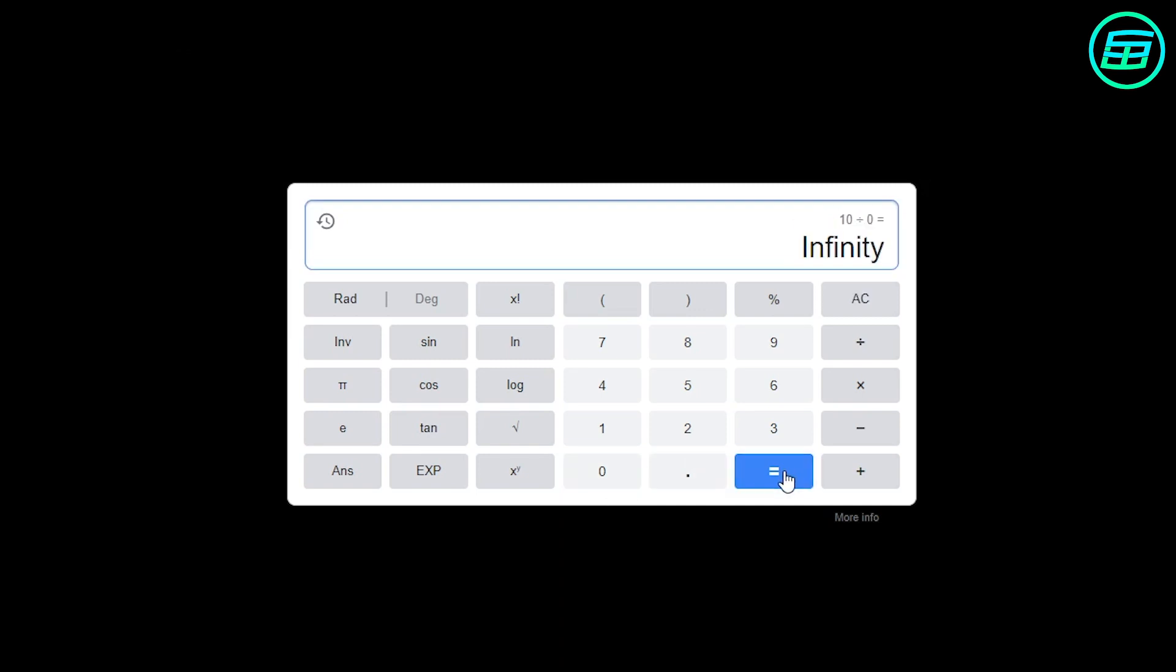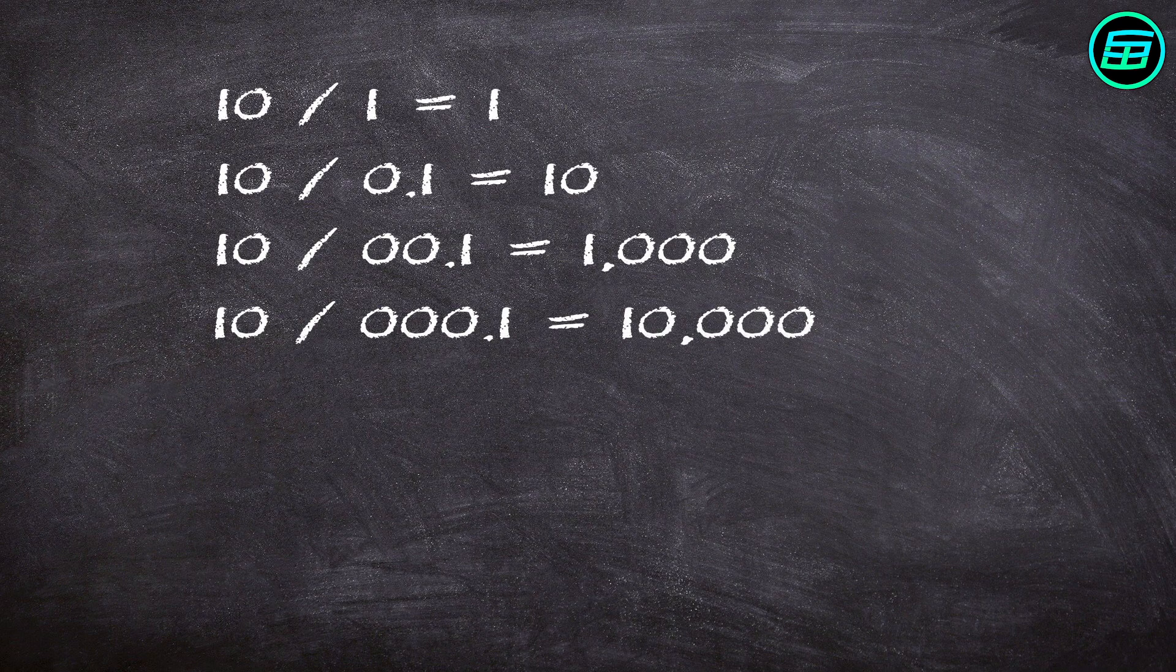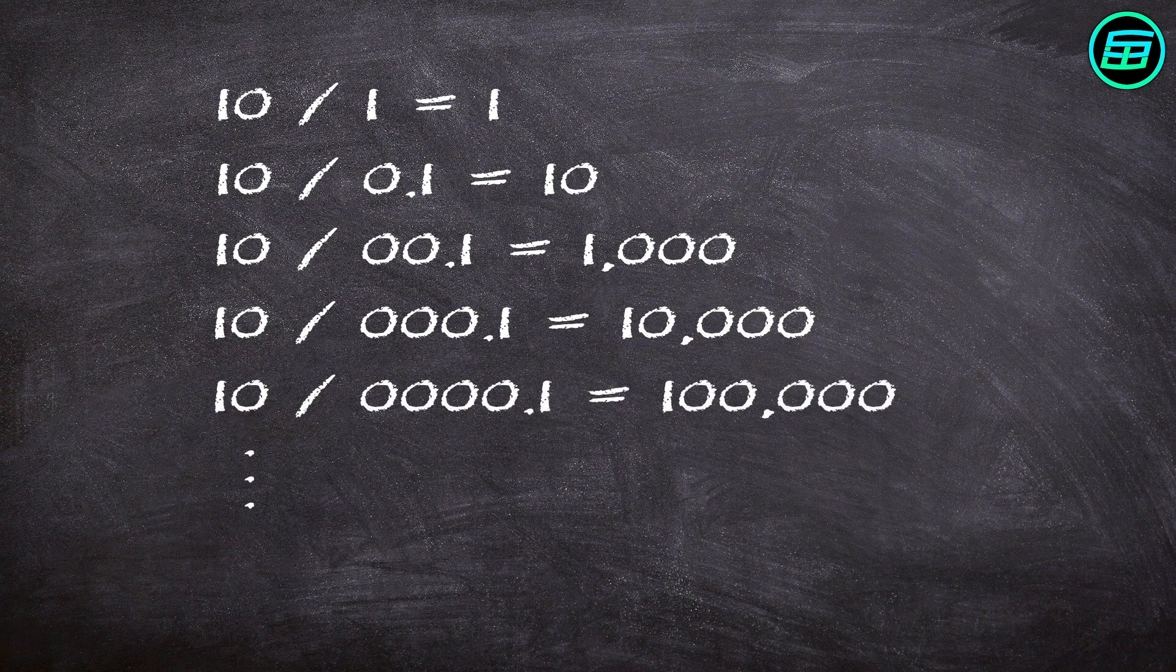Say you start with the number 10 and divide by smaller and smaller positive numbers gradually approaching zero. The answer gets bigger and bigger. So if you were actually to divide by zero, you might think the result should be positive infinity.